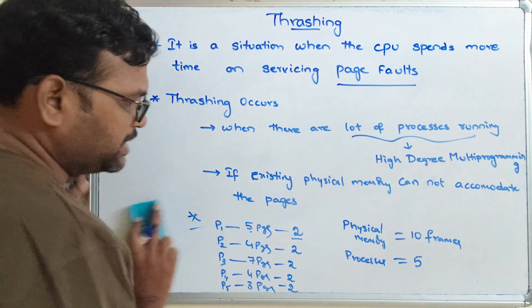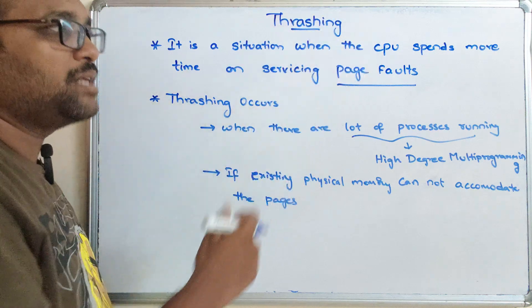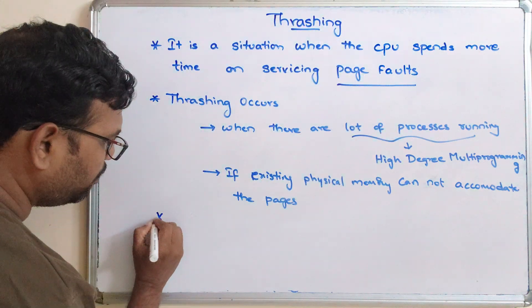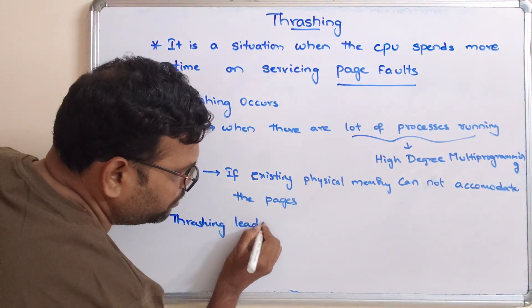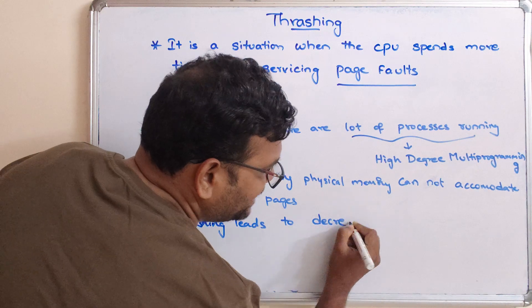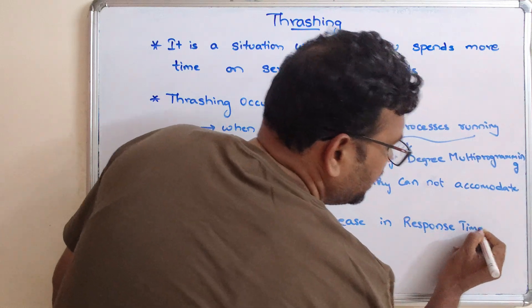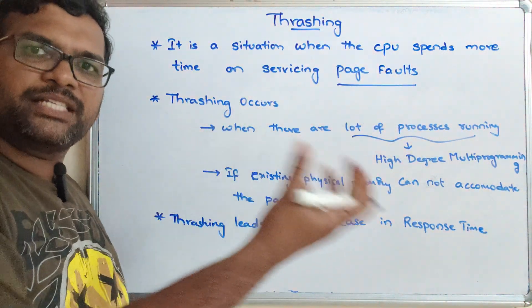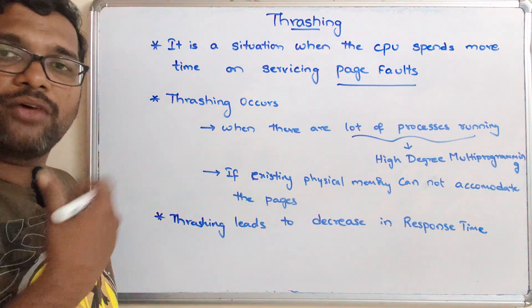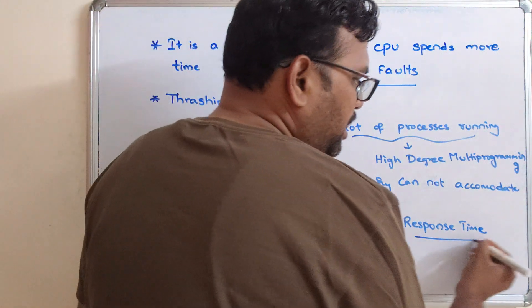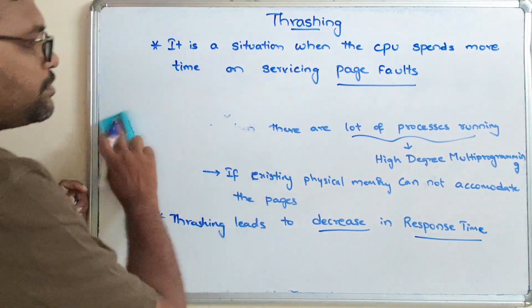If the CPU spends a lot of time servicing page faults, thrashing automatically leads to a decrease in response time, because it takes much more time to get the required page from secondary memory to main memory. So to complete a process it will take a lot of time — thrashing decreases the response time.